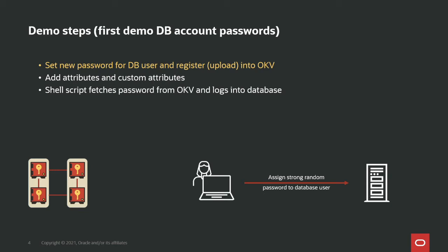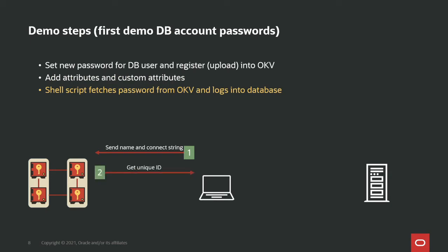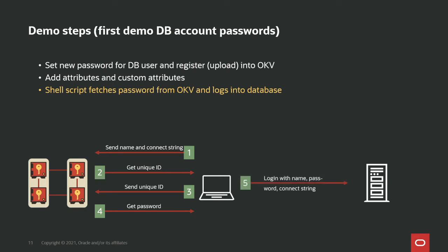The first demo covers storing database account passwords in OKV. First, we assign a very strong password to the existing database user that is used by the maintenance script to log into the database. Then we upload this password into OKV and add attributes — the name and custom attributes like the connect string — because we need to know which user connects to which database with this password. We then write a script that sends the name and connect string to OKV, receives back a unique ID, sends that unique ID back to OKV, and retrieves the password.